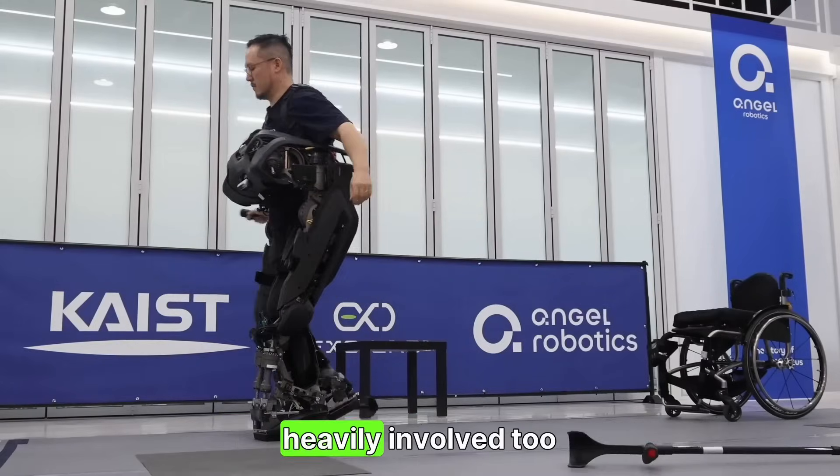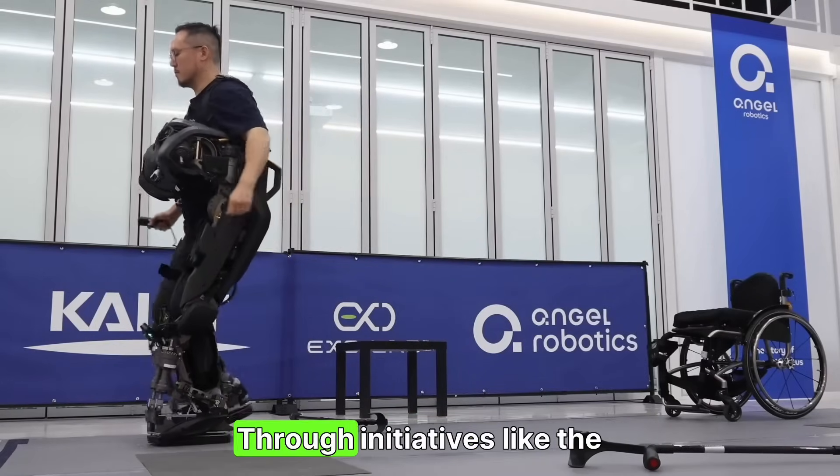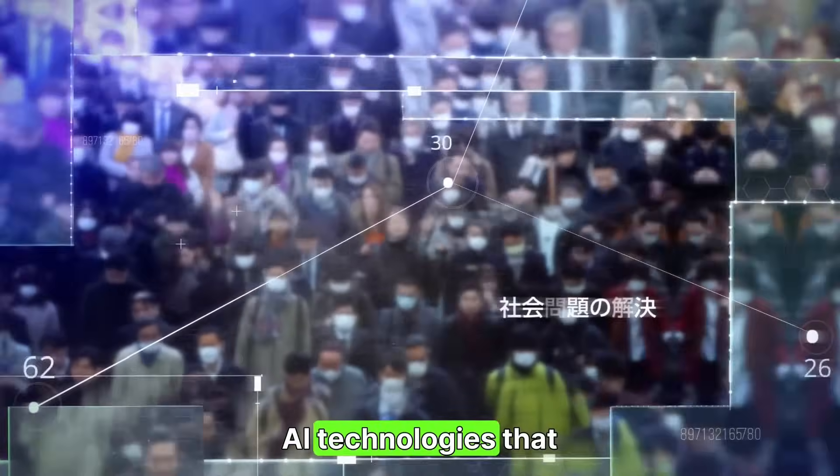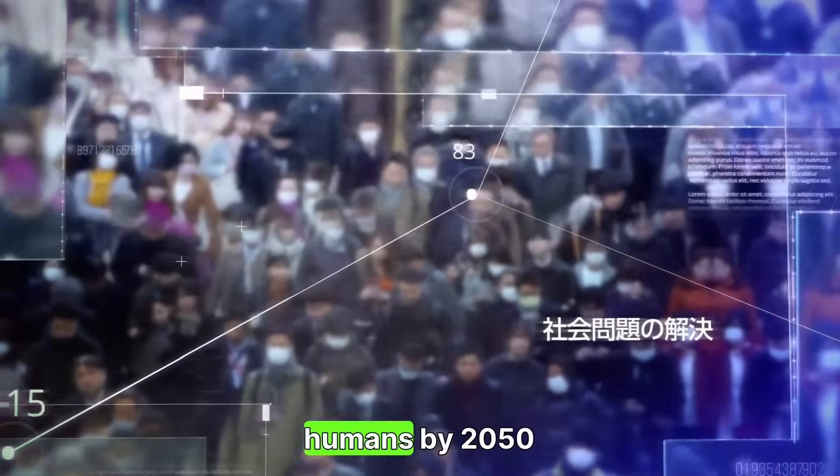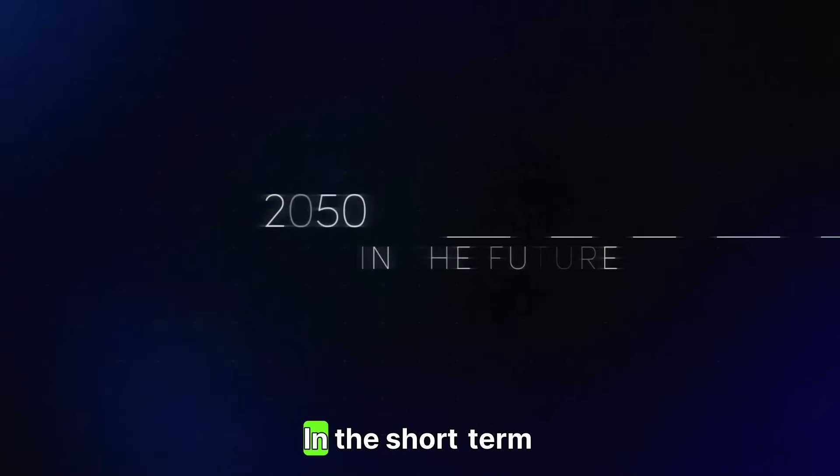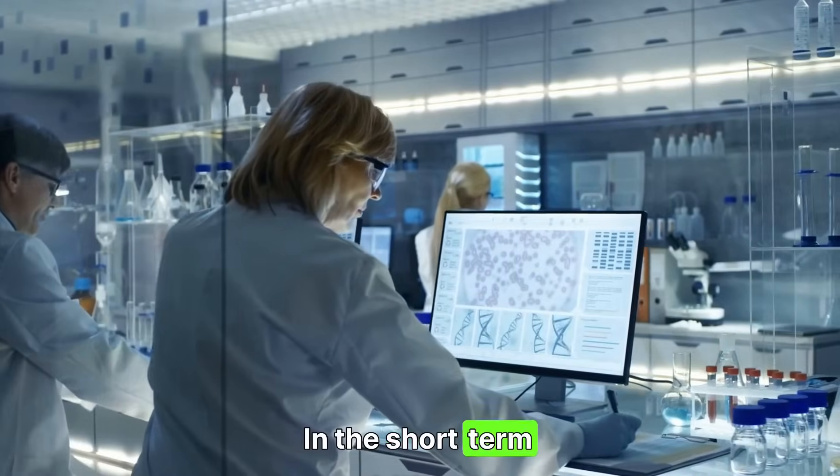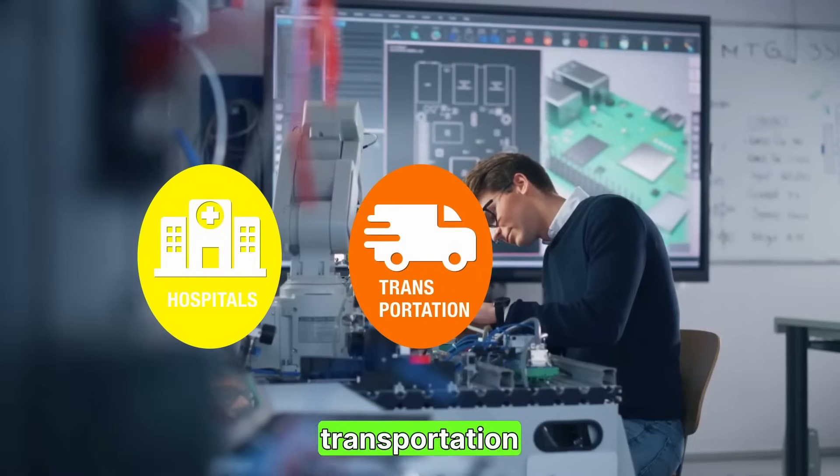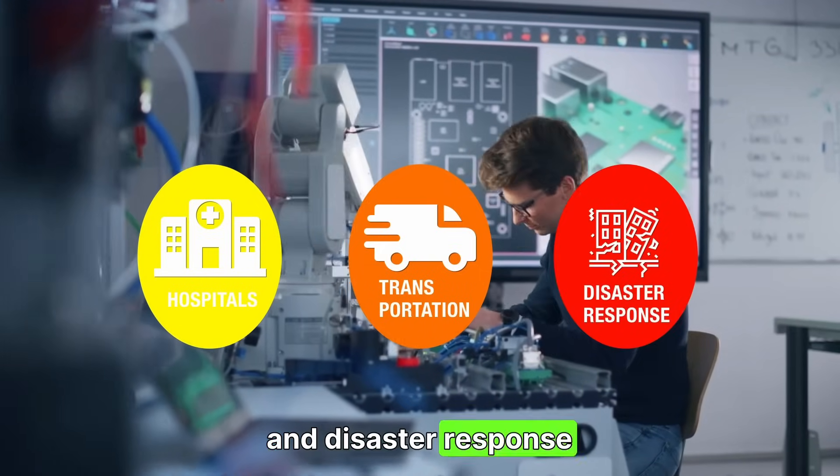The Japanese government is heavily involved too. Through initiatives like the Moonshot R&D program, they aim to develop AI technologies that can coexist with humans by 2050. In the short term, 2025, they plan to implement robots in hospitals, transportation, and disaster response.